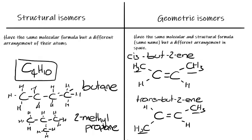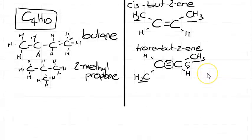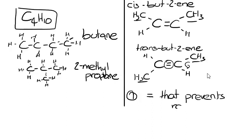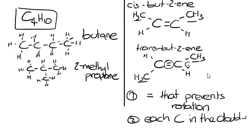In your exam questions you'll have to explain why some molecules can form a geometric isomer and some can't. There are two criteria for a geometric isomer. One: there needs to be a double bond that prevents rotation. Two: each carbon in the double bond must have two different atoms or groups of atoms attached to it.